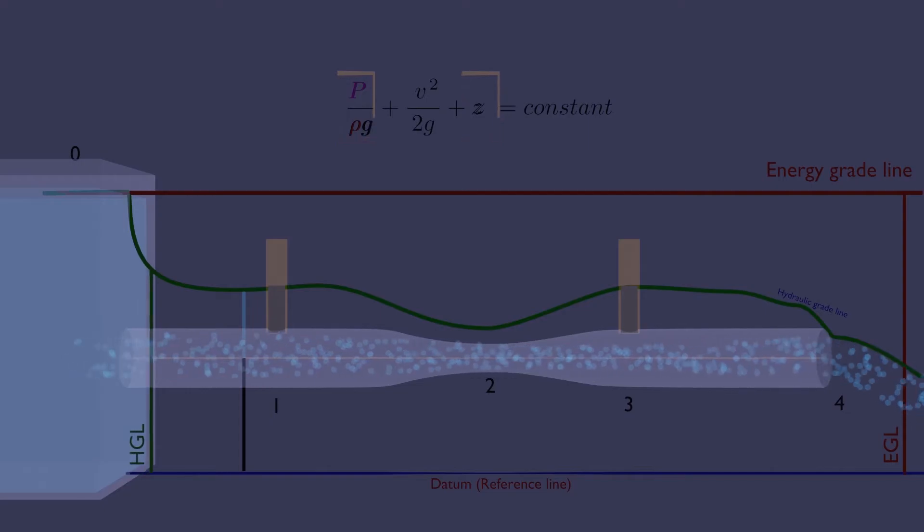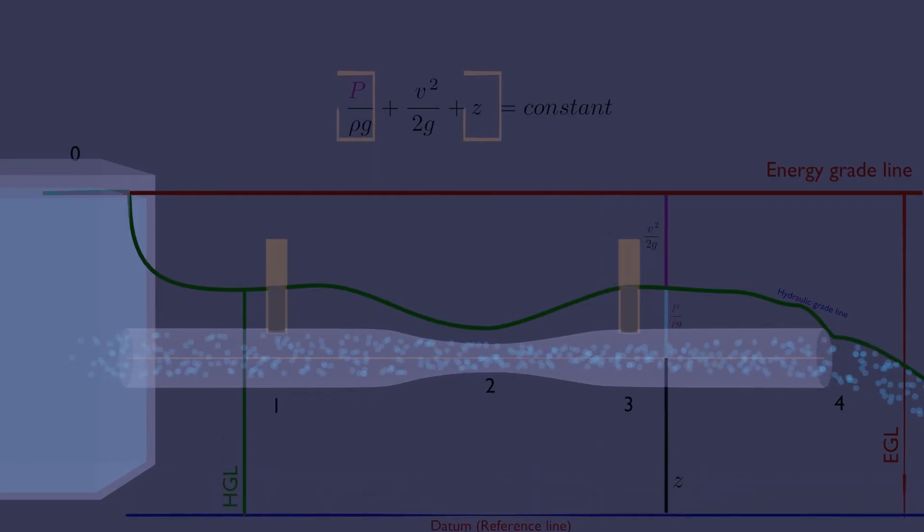HGL decreases rapidly as the liquid accelerates into the pipe. The difference between EGL and HGL is velocity head. HGL is the sum of pressure and elevation head.